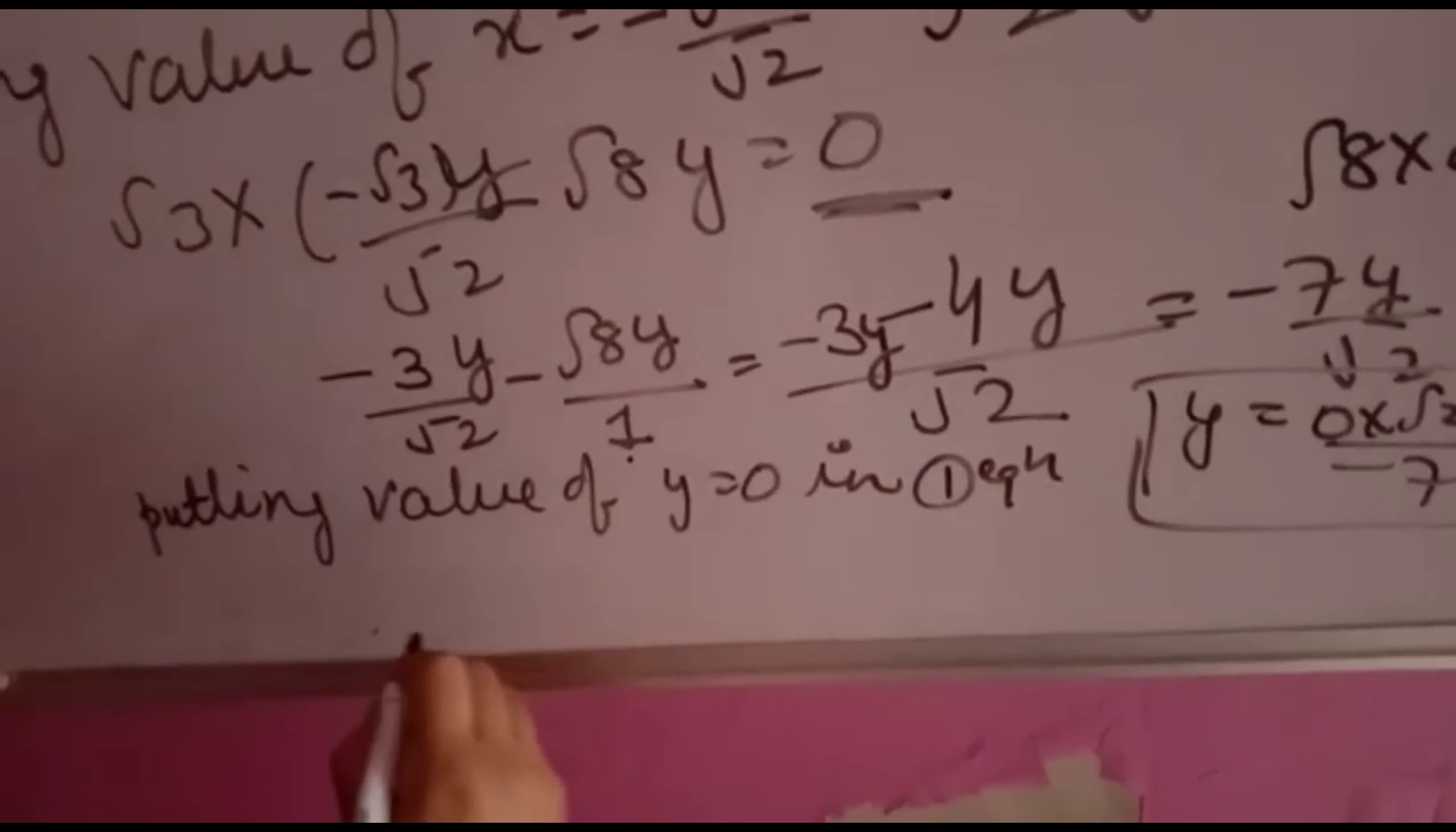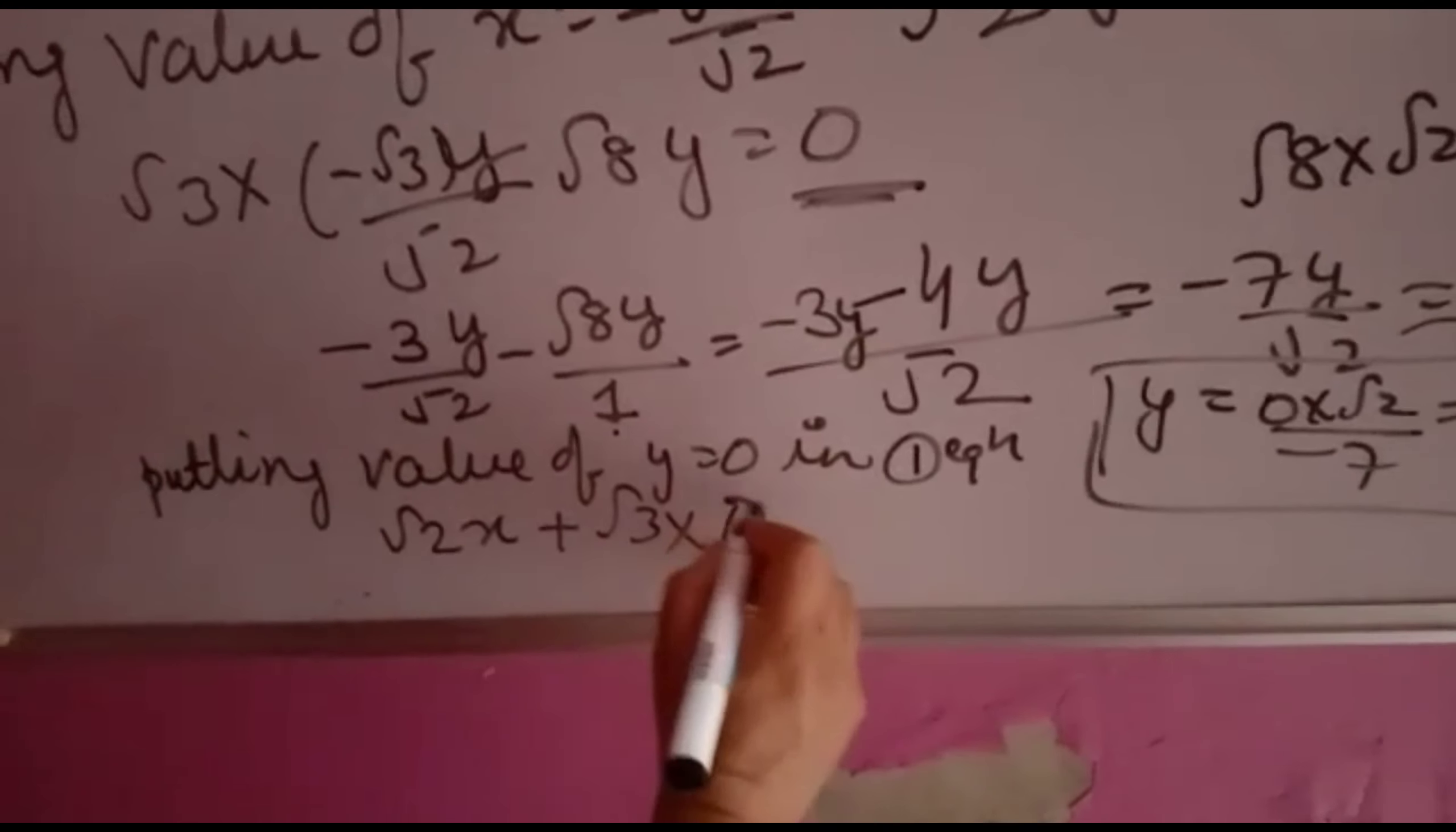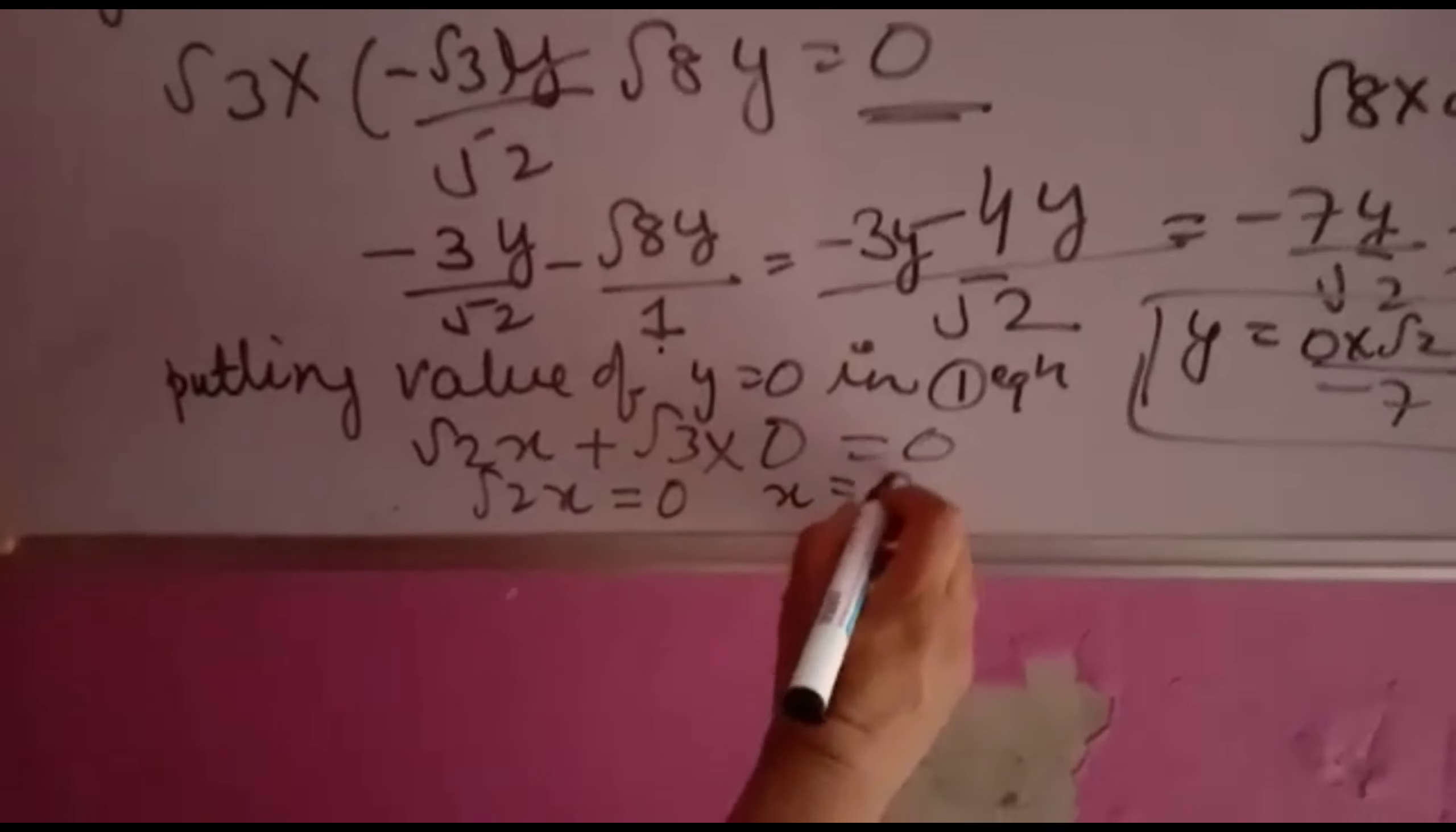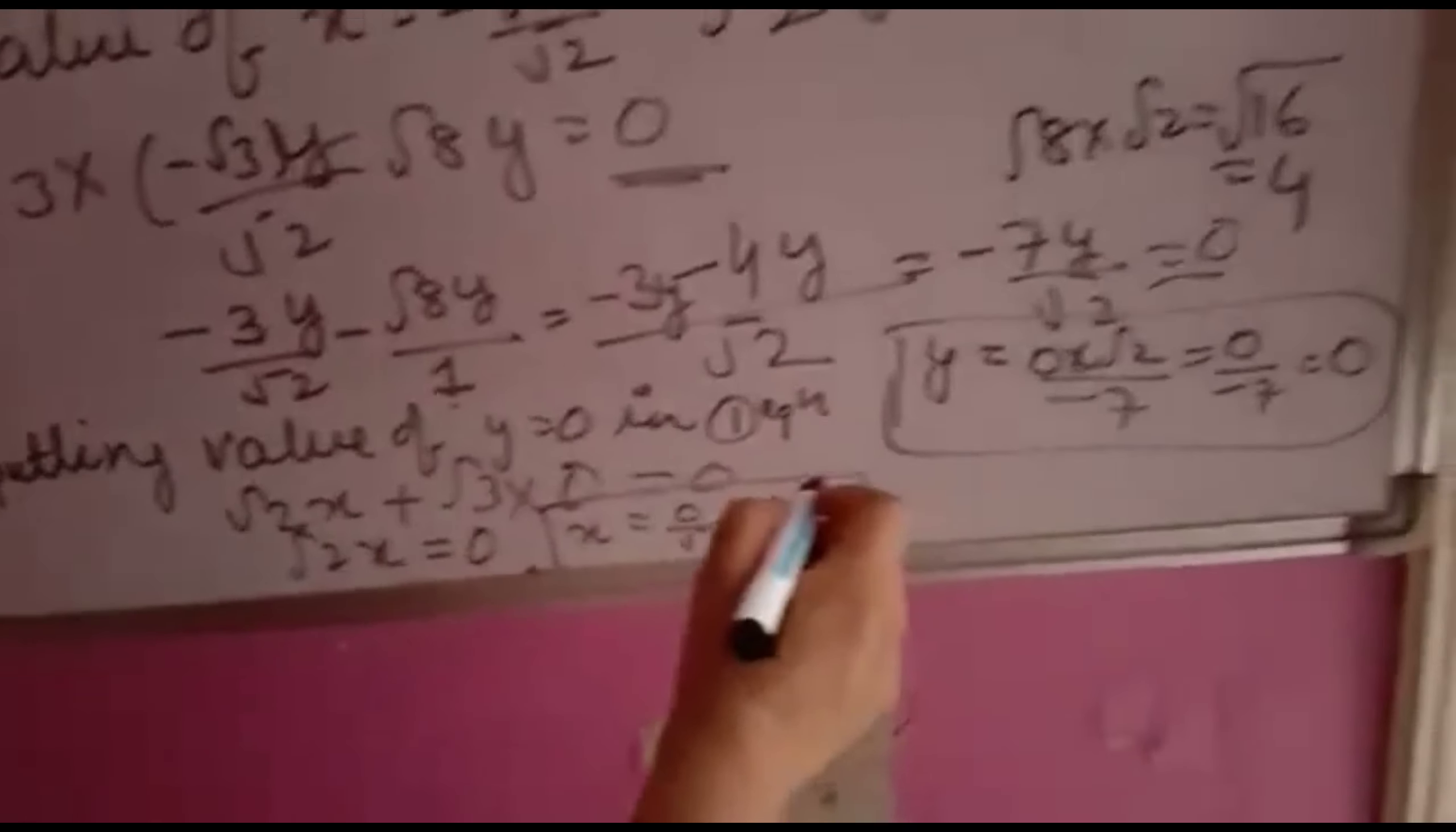Putting y = 0 in the first equation: √2x + √3(0) = 0. So √2x = 0, which means x = 0/√2 = 0. The value of x is 0 and y is 0.